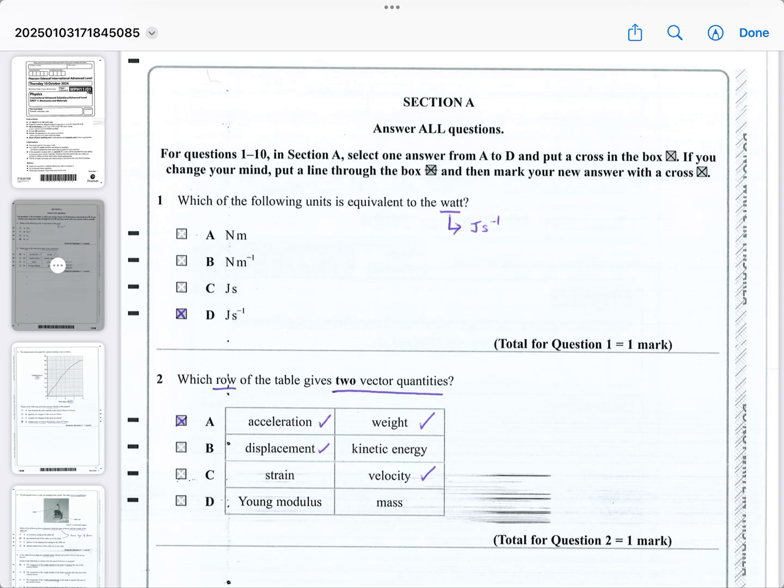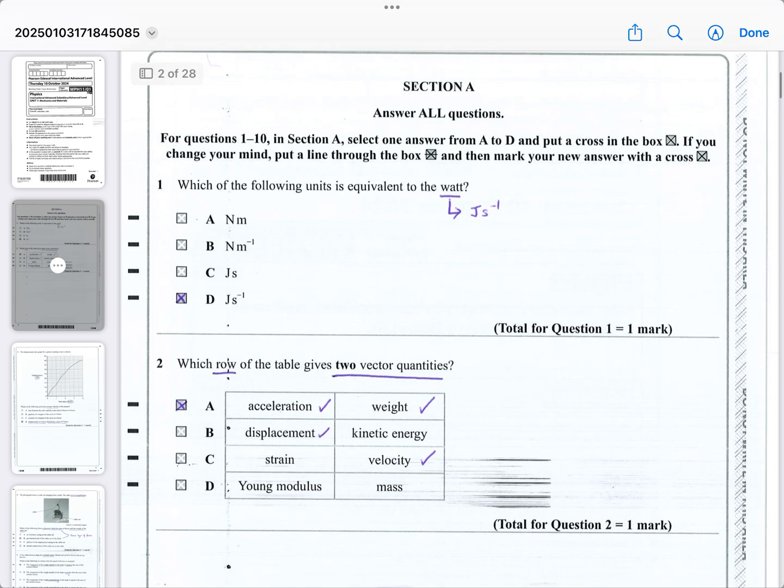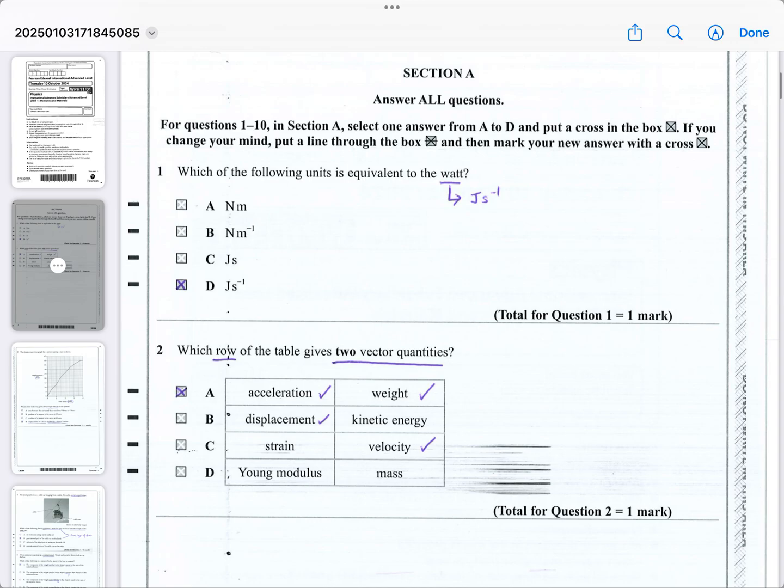Remember, Section A is always 10 multiple choice questions in the International A-Level, which is very similar to the UK version of the A-Level, where they also in Year 13 have 10 multiple choice questions at the beginning of their A-Level paper 1. So it's very similar, the two papers, and I will be starting to do some linear walkthroughs as well.